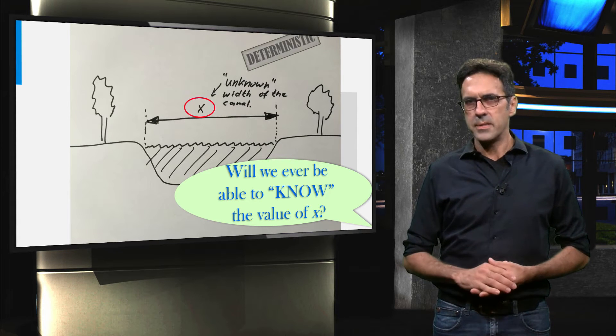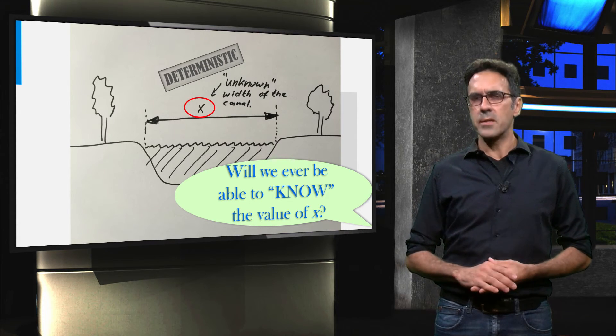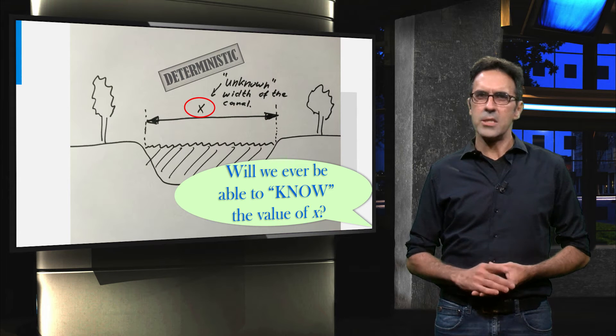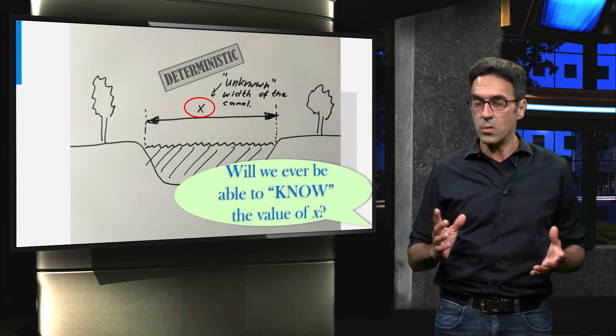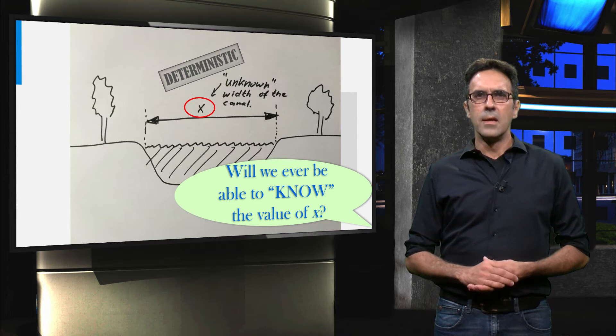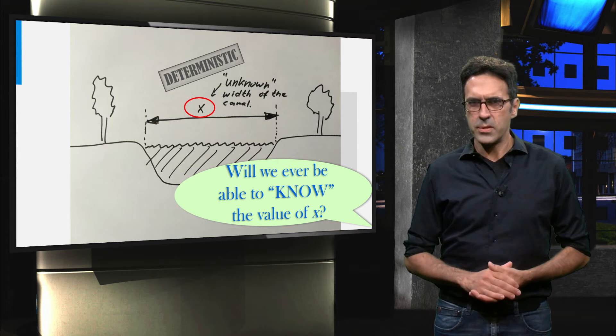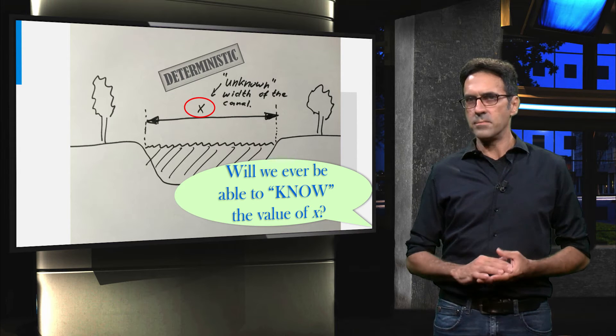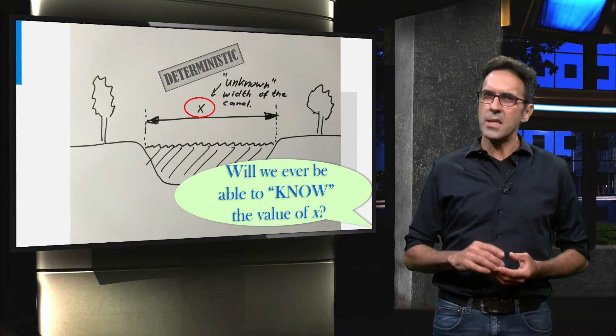This parameter, X, is what we call a deterministic variable. It has one value, which we don't know. But we do know that this value is a single number. There is only one correct answer to the question about the width of the canal. Let's go back to the site with the students.